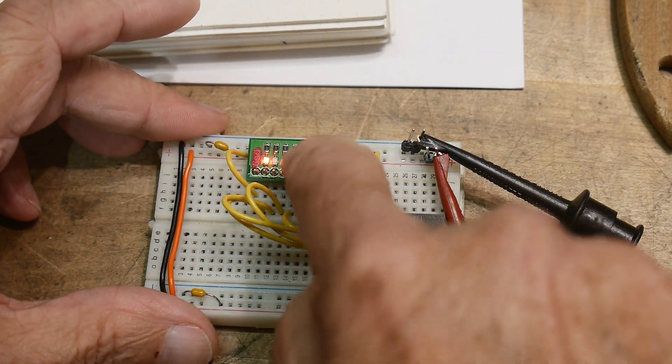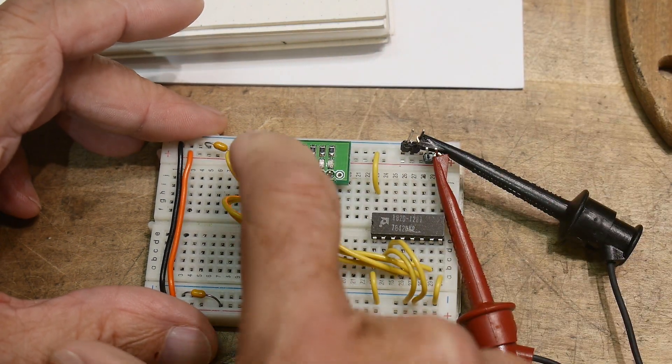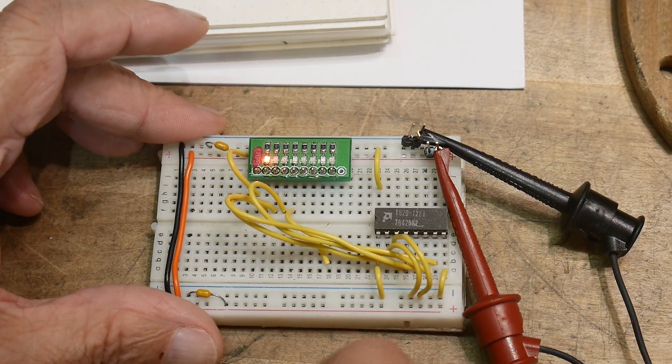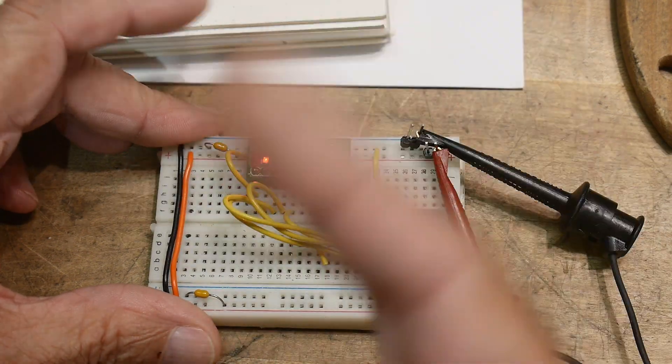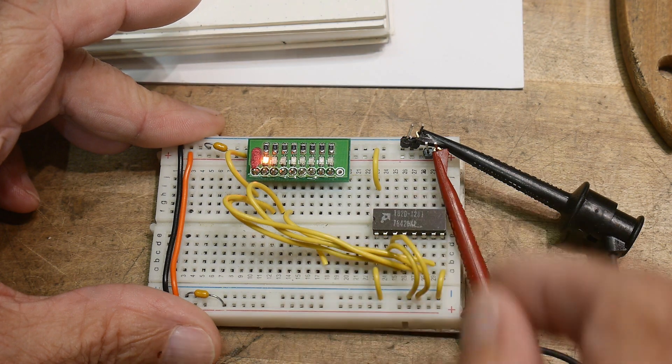So here are the, just ignore the other LEDs. The first four LEDs are the ones we're interested in. So right now the Y zero is asserted because we're inputting zero, zero.